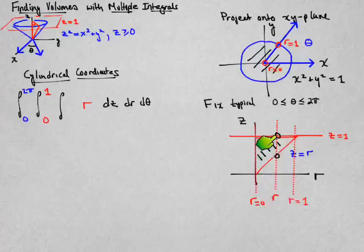And I enter when my z value is equal to r along the diagonal line, and I exit when my z value is equal to 1. So this determines my limits of integration for z: z goes from r to 1.